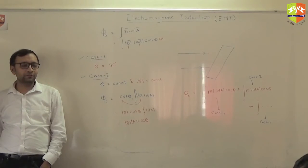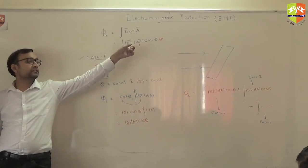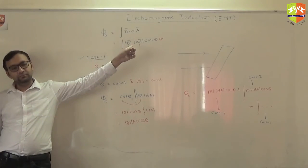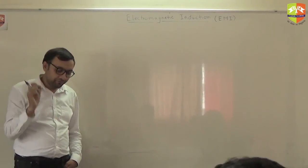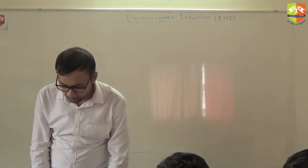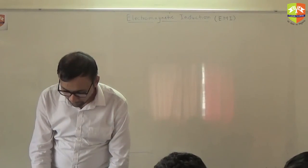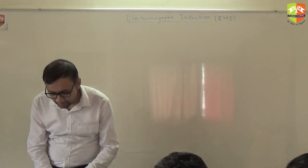Getting it? Any doubt till now? So what is the cause of the current in a loop? What it is? Change in flux, remember. And this is the flux. There you go one more thing write down that flux is defined for the loop. Okay? If you do not have a loop, the flux, the meaning of flux is, I mean the flux is meaningless.